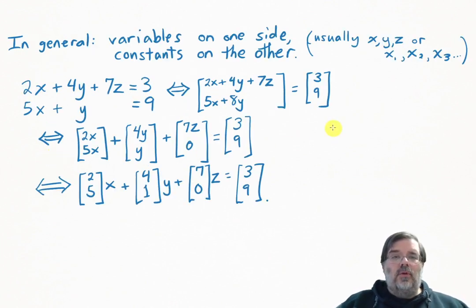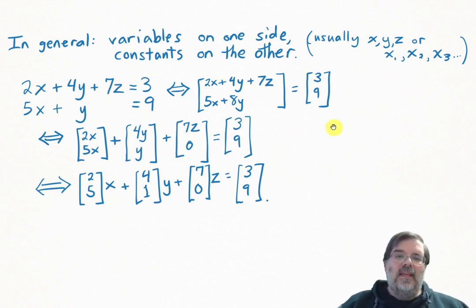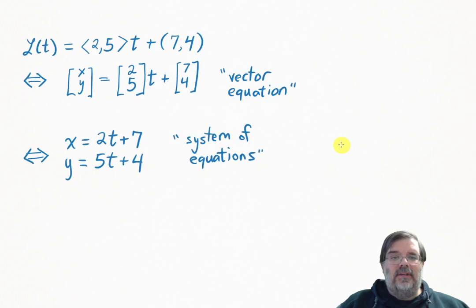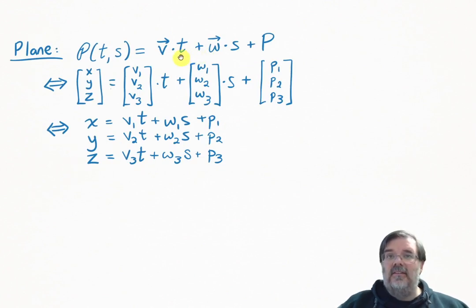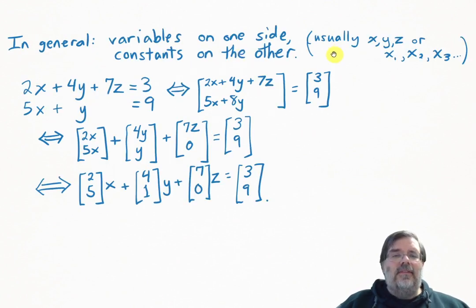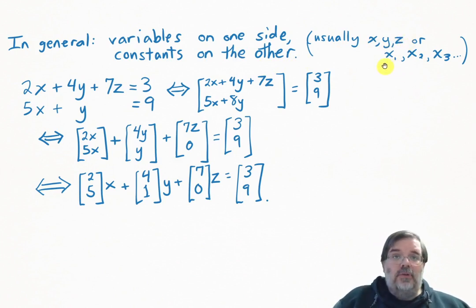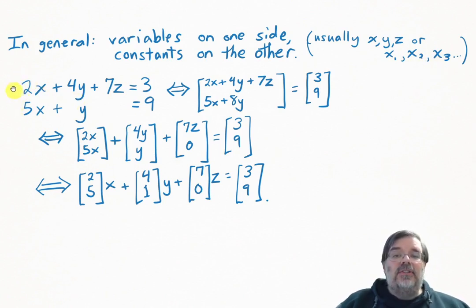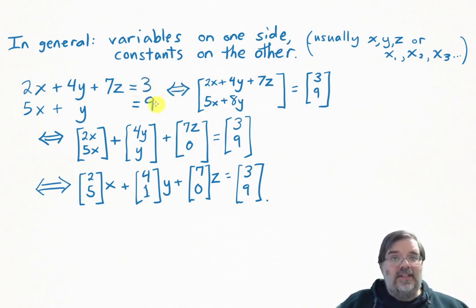In general, when we work with equations like this, we'll want to write the variables on one side and keep all the constants on the other side. Usually the variables in these equations will be x, y, and z, or sometimes written as x1, x2, x3. For example, if we have the equations of two planes, we could write that system of equations as a vector equation.